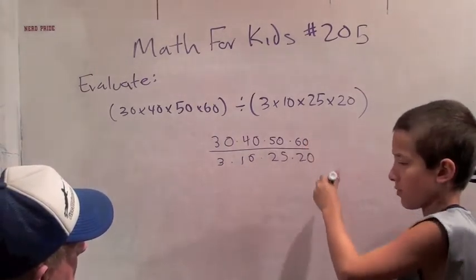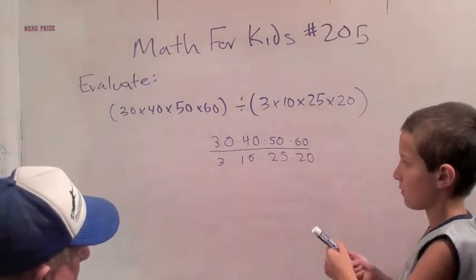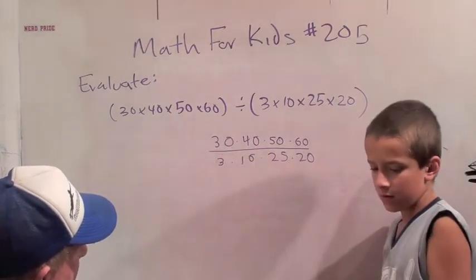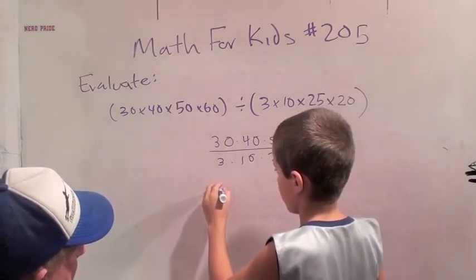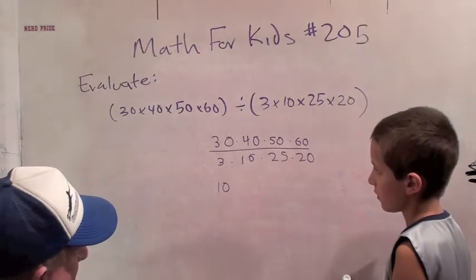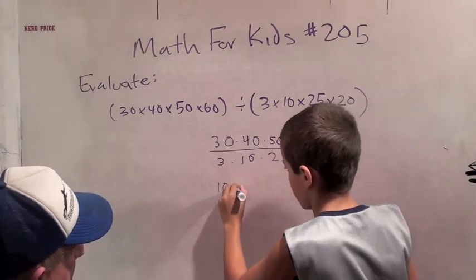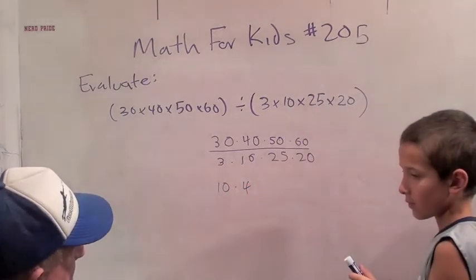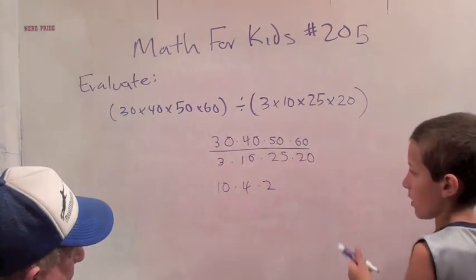Well, we can get some zeros out of the way. Maybe not yet. We could do 30 over 3. What's that? That leaves us a 10 on top. Okay, so maybe you can just write it down here for now. So 30 divided by 3 is 10. What do you want to do next? 40 over 10 is 4. 50 over 25 is 2.